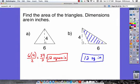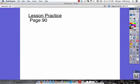Let's move on to lesson practice, page 90. Key thing in this lesson: area of a triangle is base times height divided by 2. Make sure you've got that in your notes. If you have any questions, write them down. Otherwise, I'll see you next class.